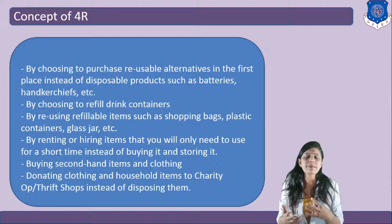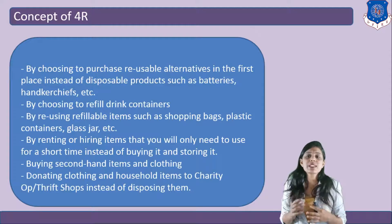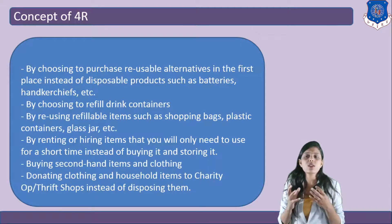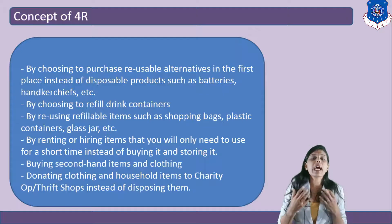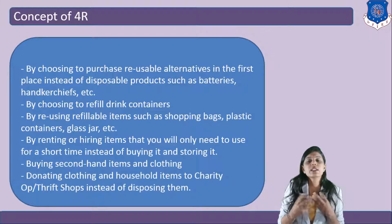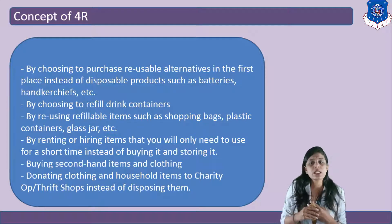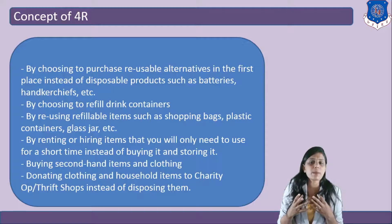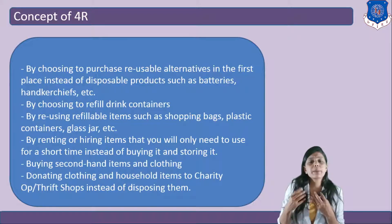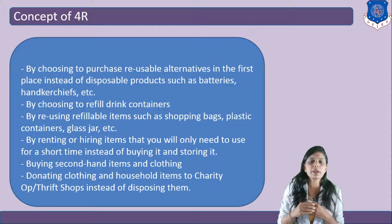How can we help in the concept of 4R? First, by choosing to purchase reusable alternatives instead of disposable products such as batteries or handkerchiefs. Utilize materials which are reusable rather than disposable — for example, use a steel glass instead of a disposable glass, as a steel glass can be utilized again and again. Also, by choosing to refill drink containers and using refillable pens instead of use-and-throw pens.